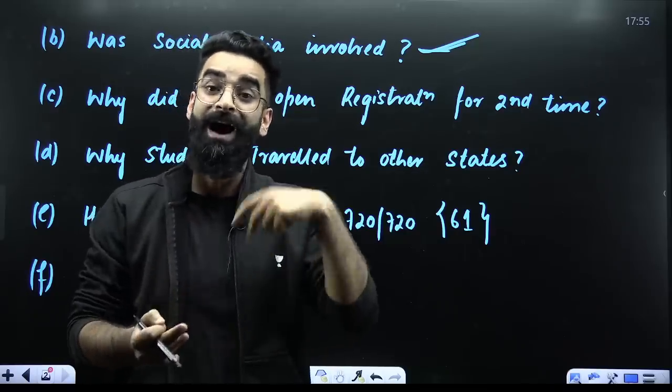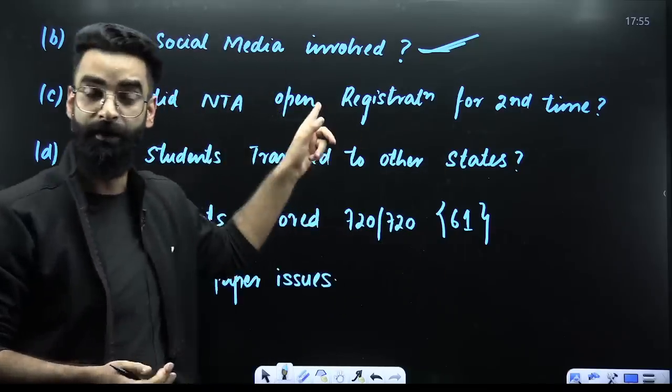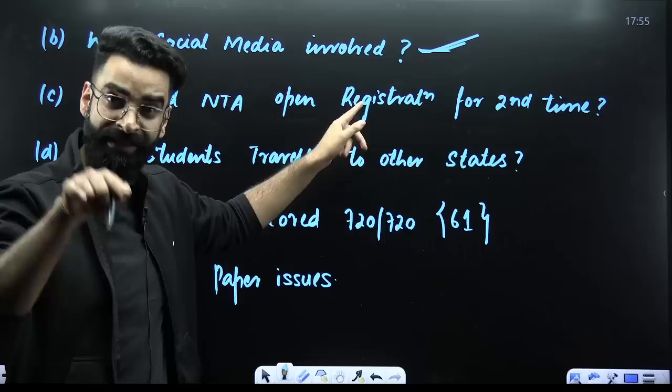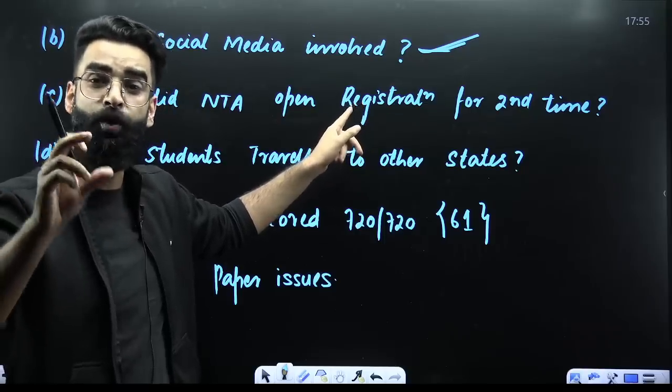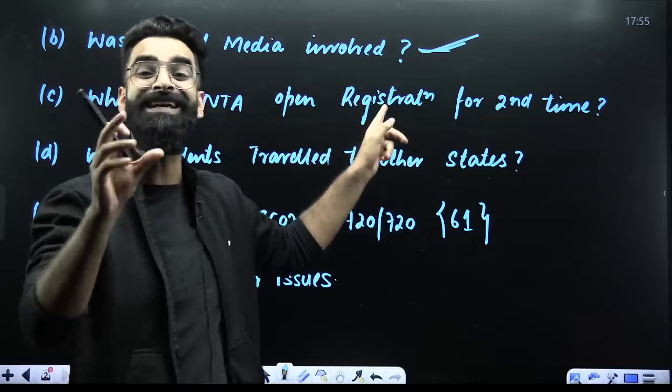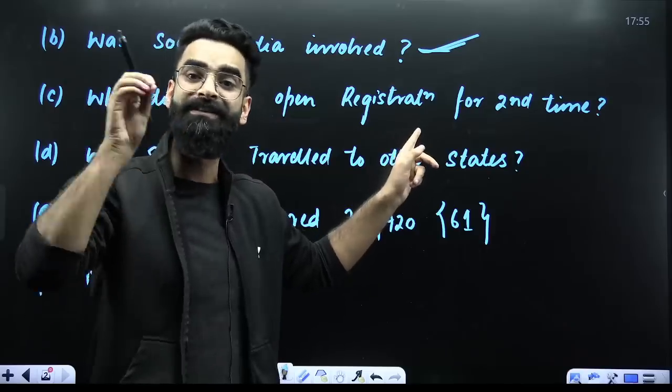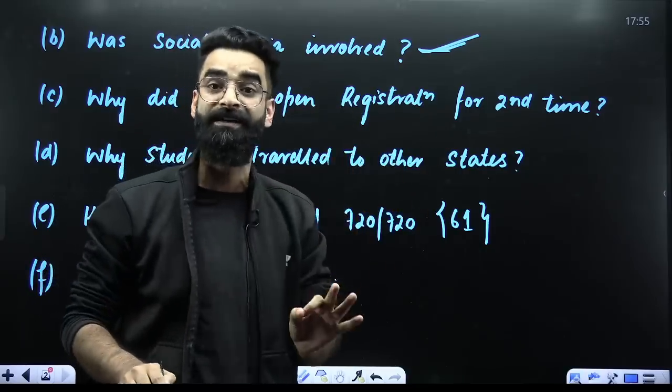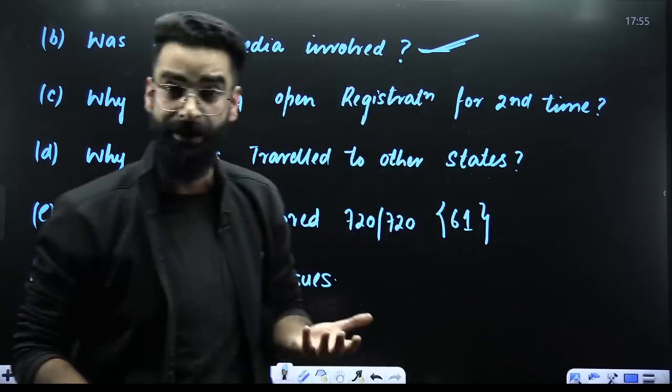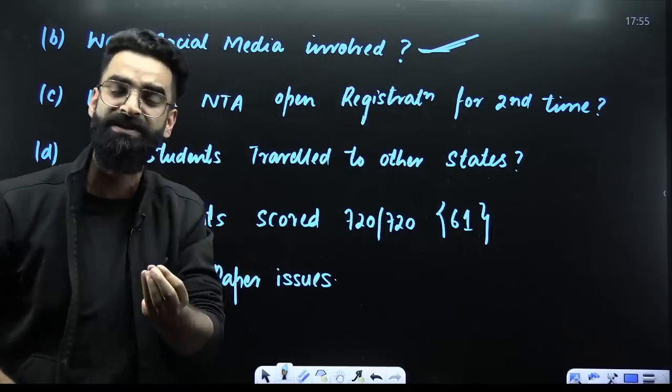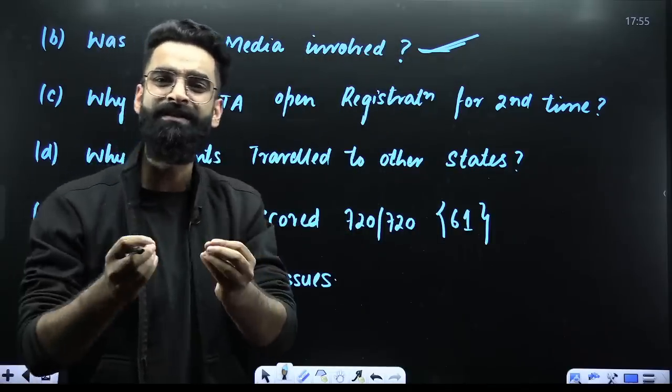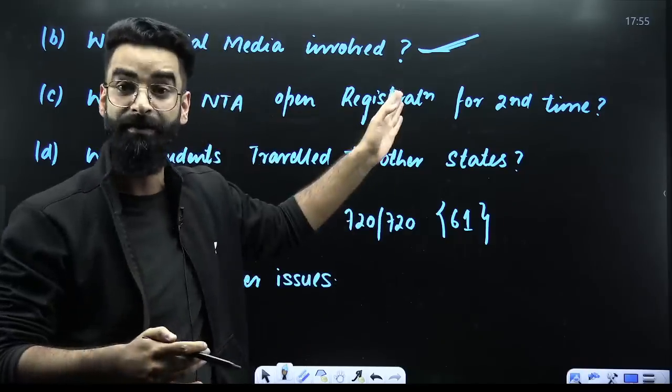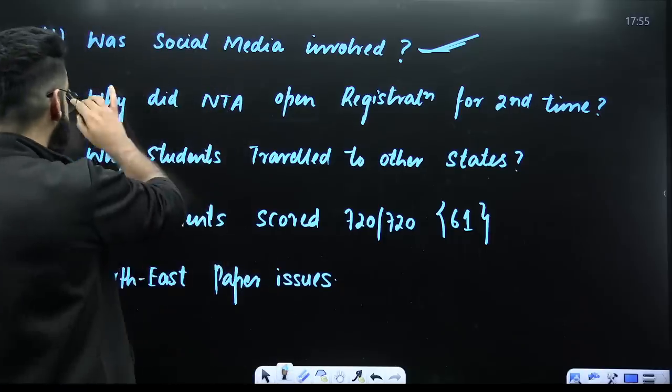This was not the only question. The other question, the sub-question - this was the main question. Why did NTA open the registration for the second time? And when they opened the registration for the second time, those students who registered for the second time, they want the details of those students and they want to exactly see whether there is any topper from those students who registered for the second time for the NEET 2024 examination. And if there comes out to be certain students who scored 720 out of 720 and they registered for the second time, then definitely again the chance of re-NEET is high.